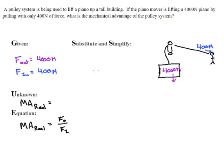So that is 4000 divided by 400, which is a 10 over 1, or you can write it 10 to 1. Either one of those would work well.